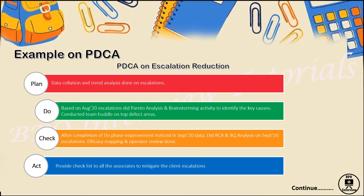In the Act phase, you provide a checklist to associates to mitigate client escalations. You have identified the process to follow, and you repeat it for the next month, implementing new concepts and new ideas. You share the checklist so associates know what to follow and what errors to avoid. This is how you do PDCA — it is straightforward and easy to explain in front of HR or implement in your projects.